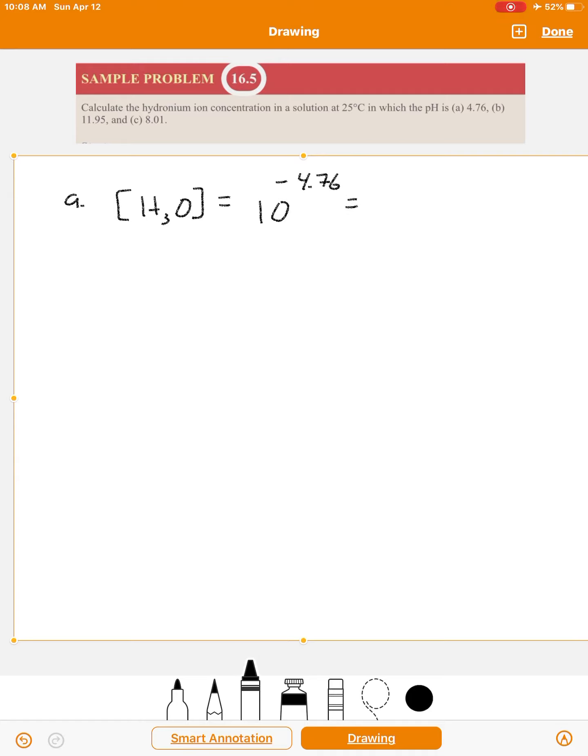The only tricky part is how do you enter that into your calculator. It depends on the type of calculator you have. Some calculators, you hit the 10 function, then put in minus 4.76, then equals. Other calculators, you put in 4.76, change it to negative, and then do 10 to the X. Typically, your calculator will have a button that says log, and above it, 10 to the X. If you're using the button that's up there, you'll have to use your shift key to access that function.